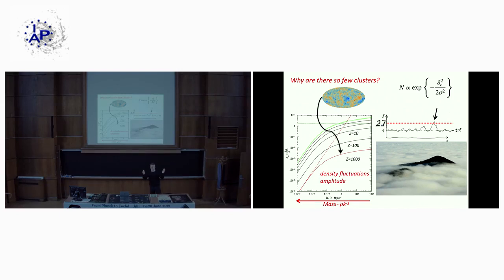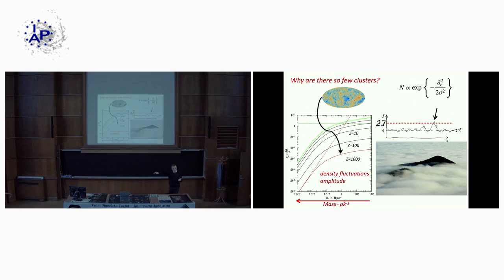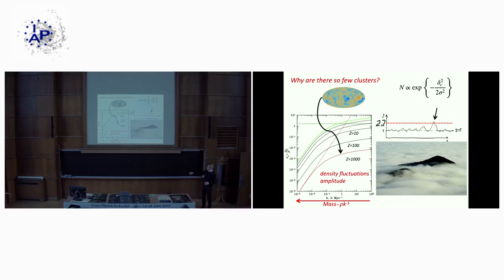At small scales the amplitude is larger — first stars and first galaxies appear around redshift 10 to 20. But clusters exist at scales of around 10 megaparsecs, where even at redshift zero the amplitude is so small that only very peculiar fluctuations can reach the threshold required to form a cluster. That is why there are only a few massive clusters — far fewer than smaller-scale objects.